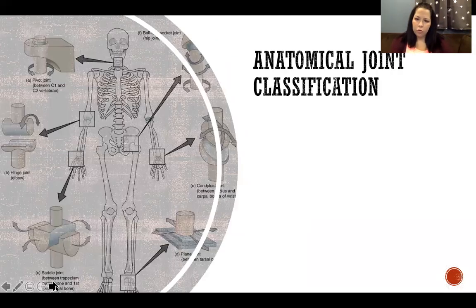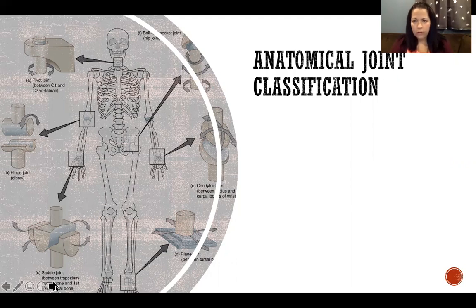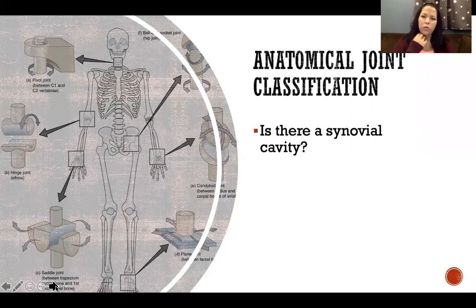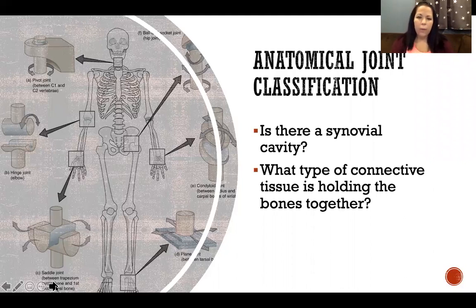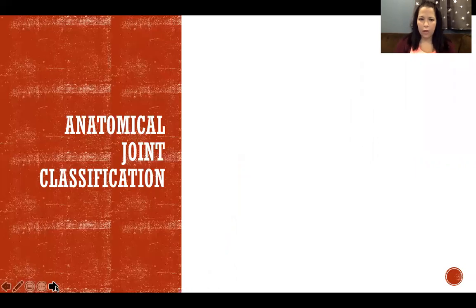Anatomical joint classifications are based on the structure of what we're classifying — what it's made of and how it's built. For anatomical joint classifications we ask two questions: Is there a synovial cavity, yes or no? And what type of connective tissue is holding the bones together? Based on those two questions we get three anatomical classifications.